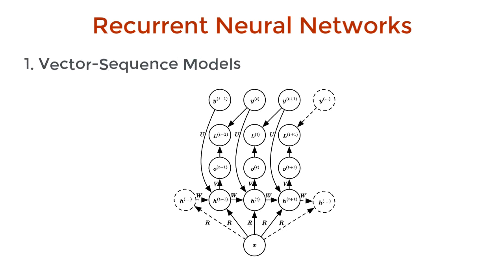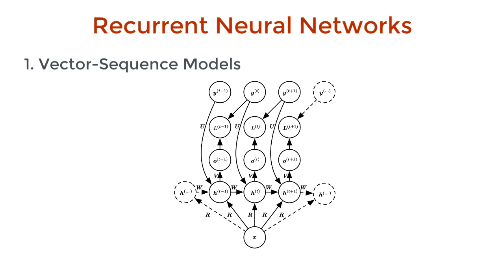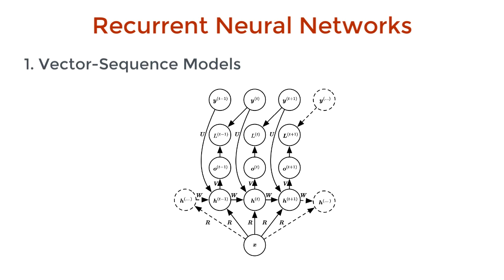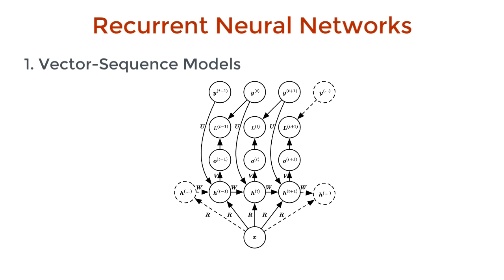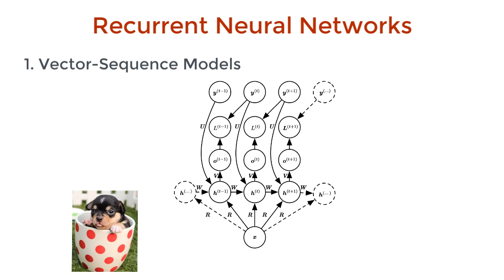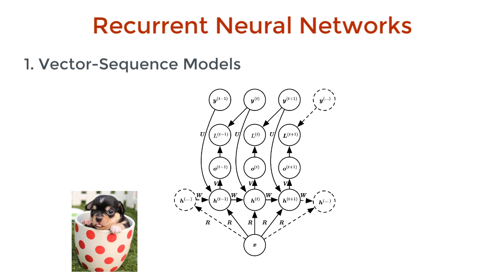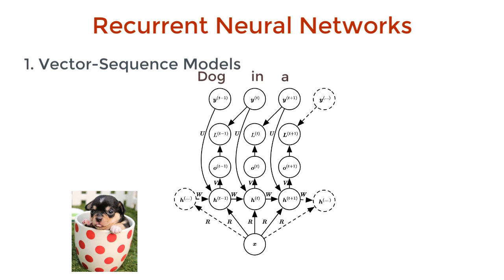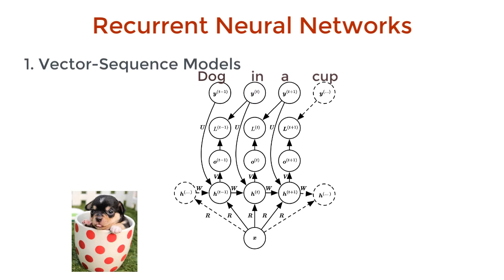The first is vector-to-sequence models. These neural nets take in a fixed-size vector as input and output a sequence of any length. In image captioning, for example, the input can be a vector representation of an image, and the output sequence is a sentence that describes the image.